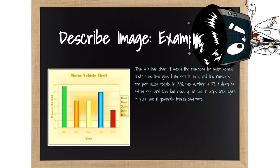Here is the simple answer. This is a bar chart. It shows the numbers for motor vehicle theft. The time goes from 1998 to 2002, and the numbers are per 100,000 people. In 1998, the number is 57. It drops to 54 in 1999 and 2000, but rises up in 2001. It drops once again in 2002, and it generally trends downward.